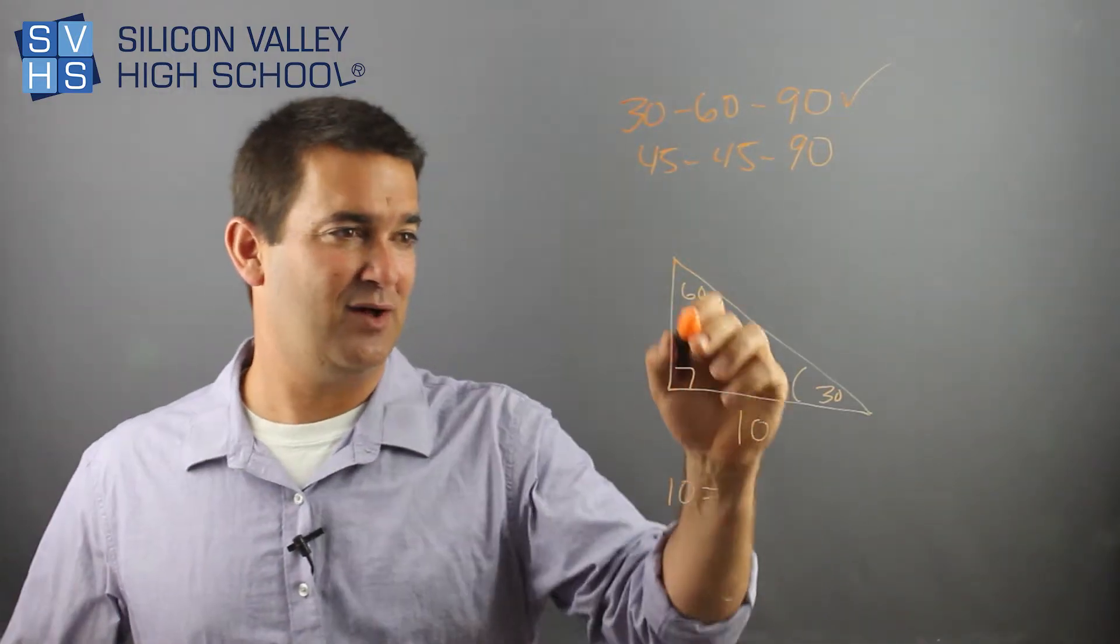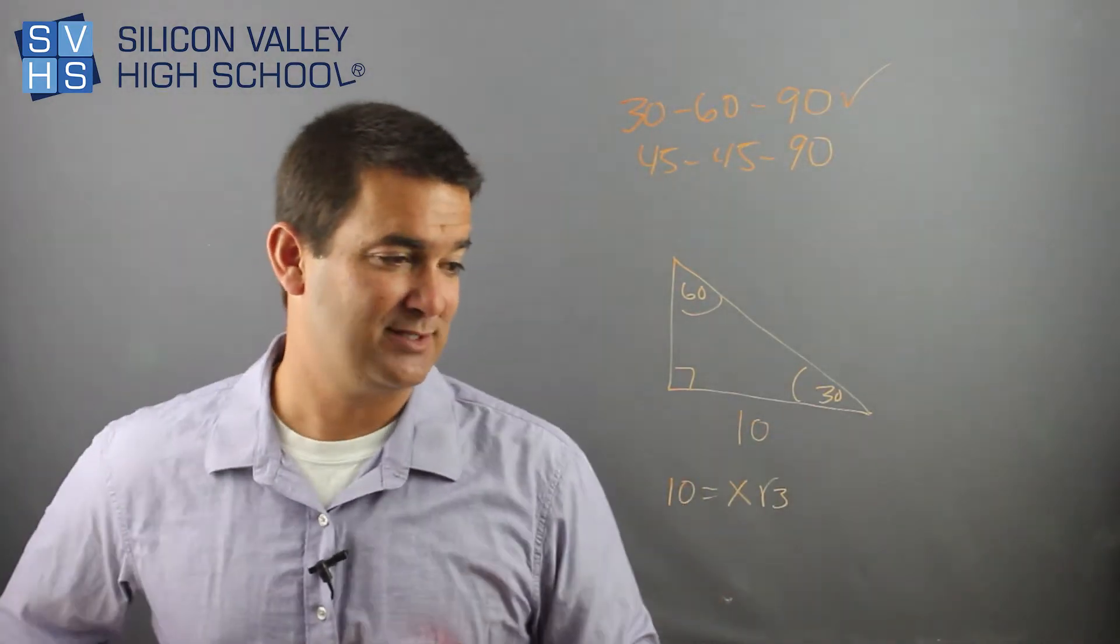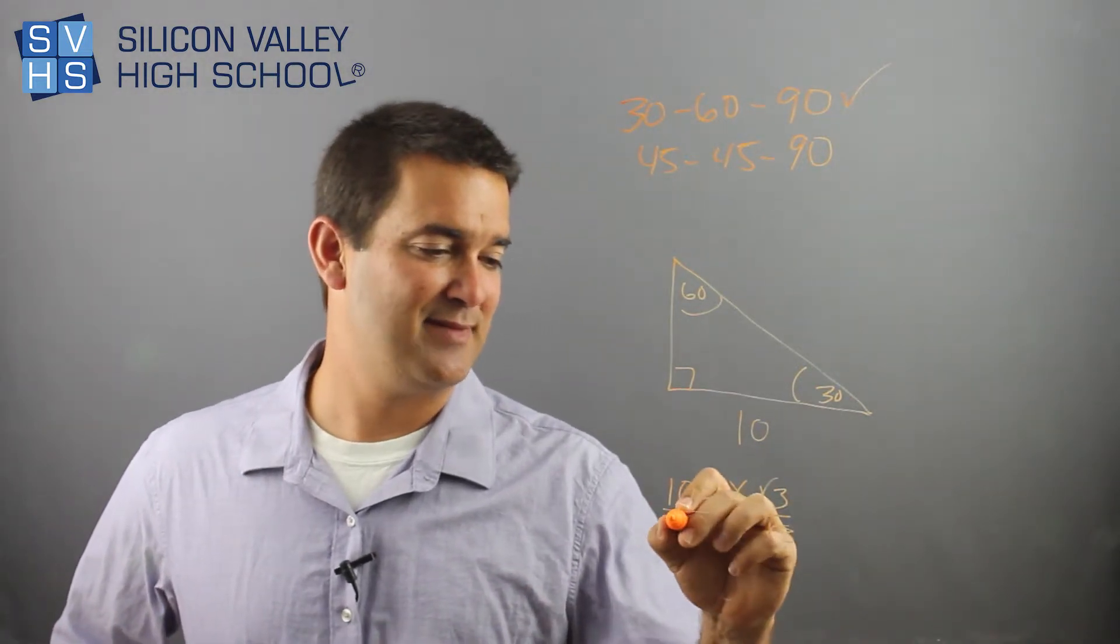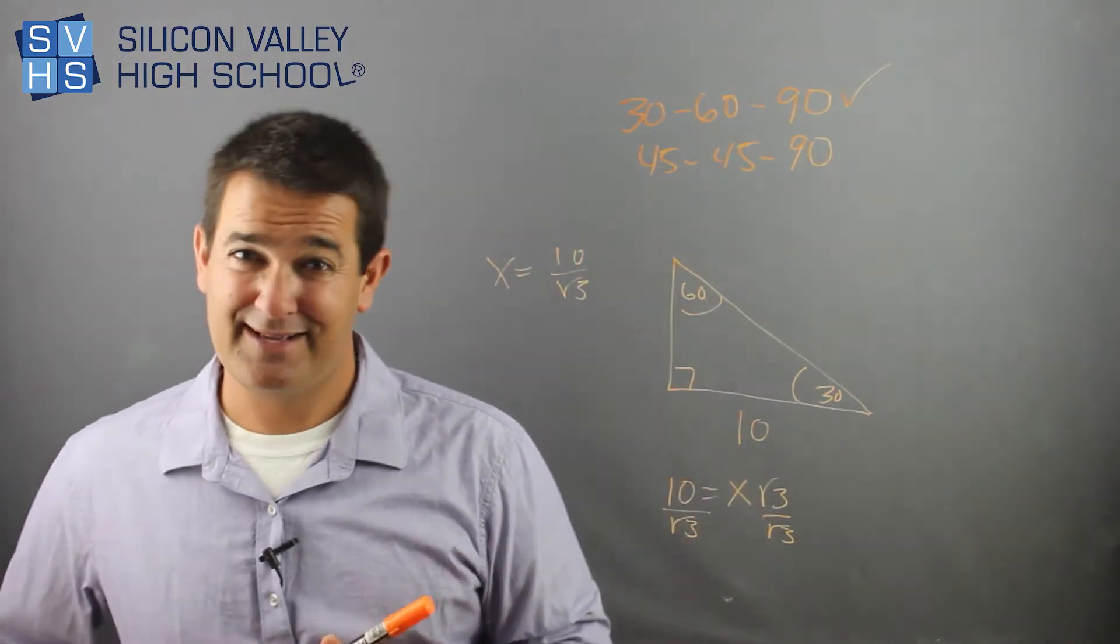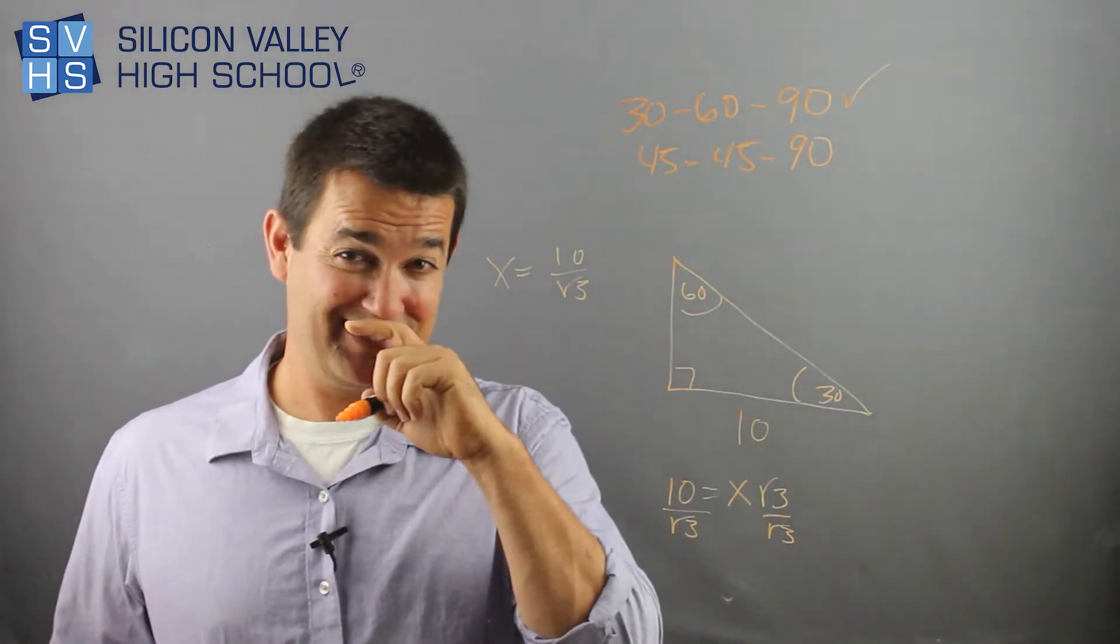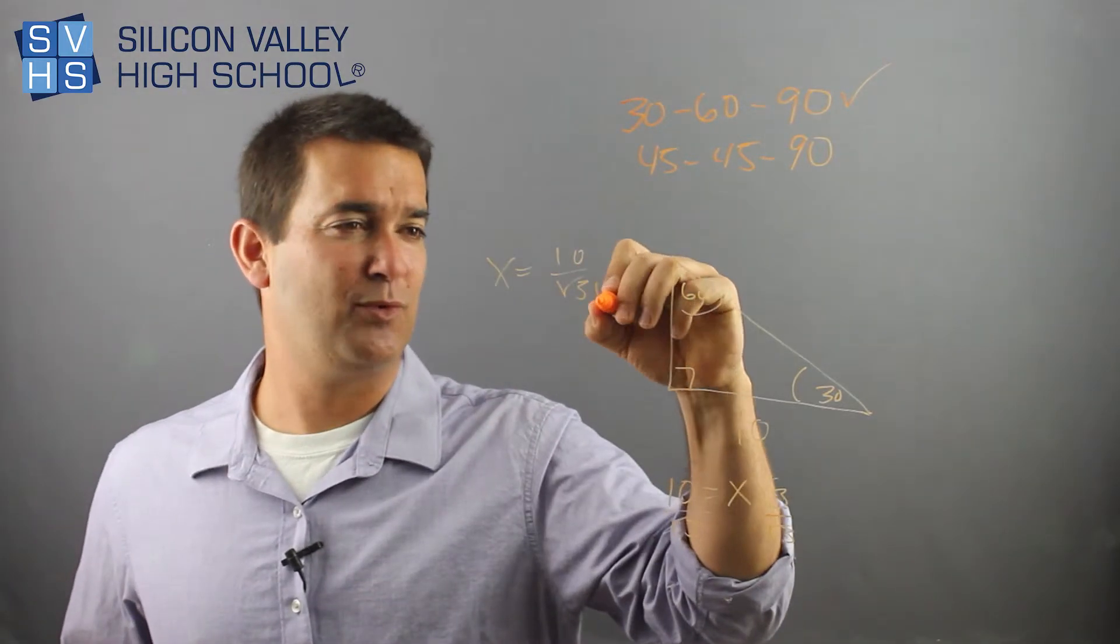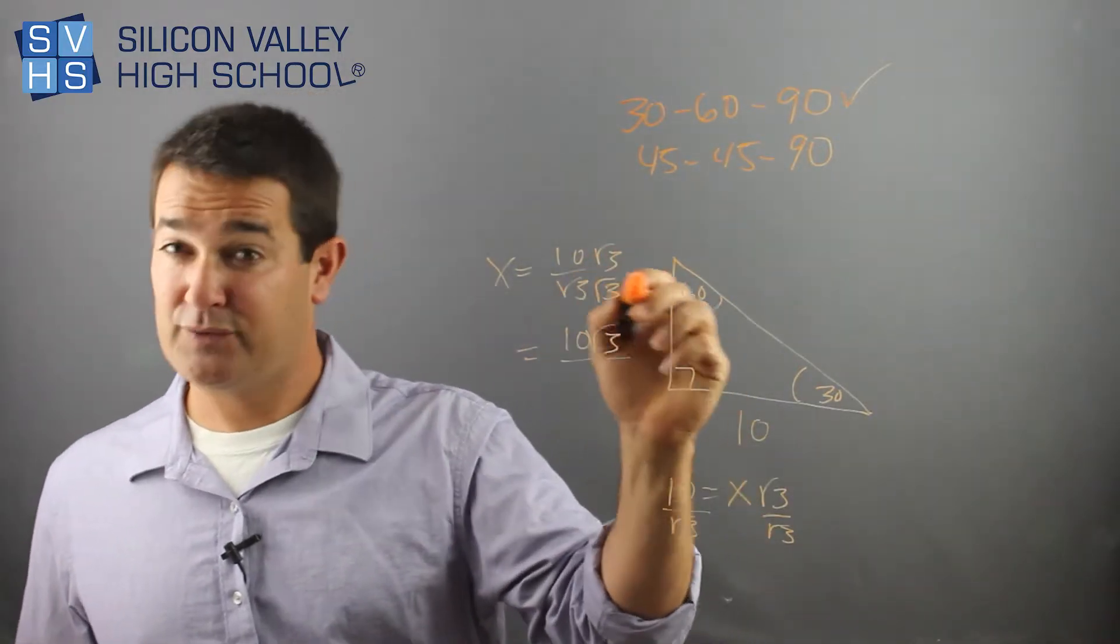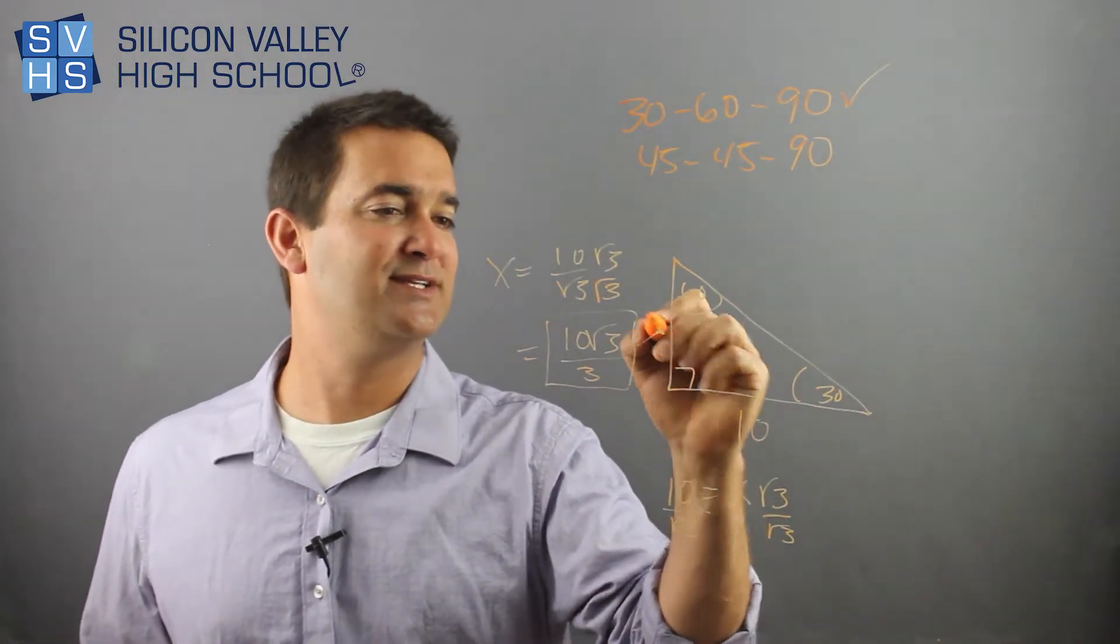well, Ryan said that the longer side is equal to x root 3. So just do that: 10 equals x root 3, and then solve for x. Divide both sides by root 3. So your answer would be x equals 10 over root 3. Now, the real nerds in the audience are saying, oh no, you can't have a root in the denominator. That's illegal. True statement, nerds of America. I'm one of you, so I can be proud with you.